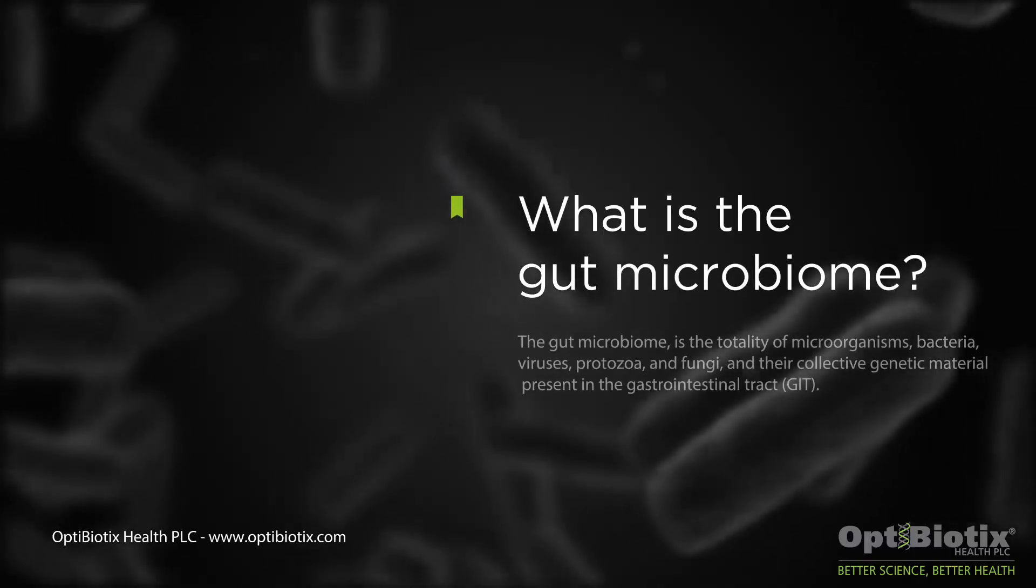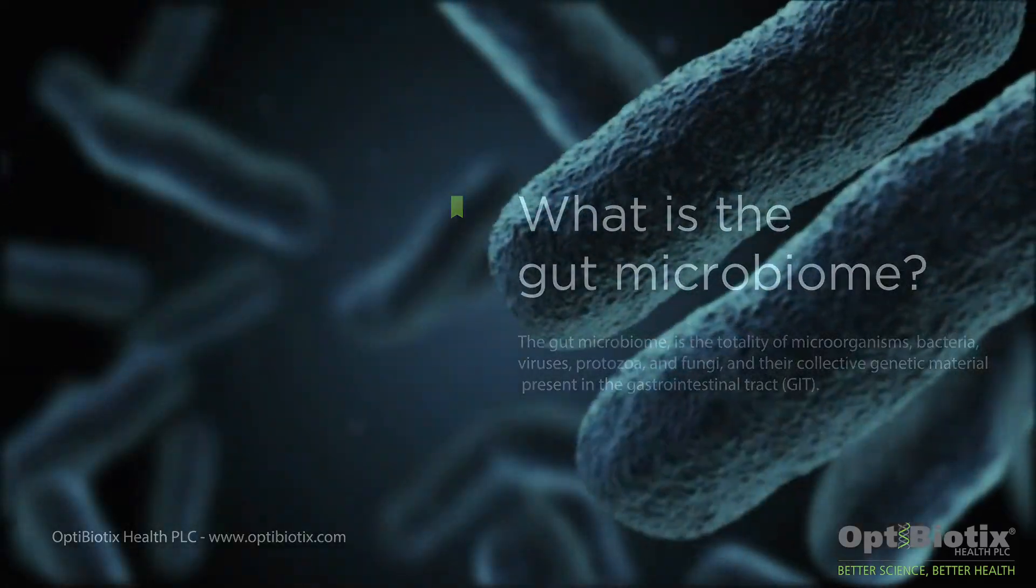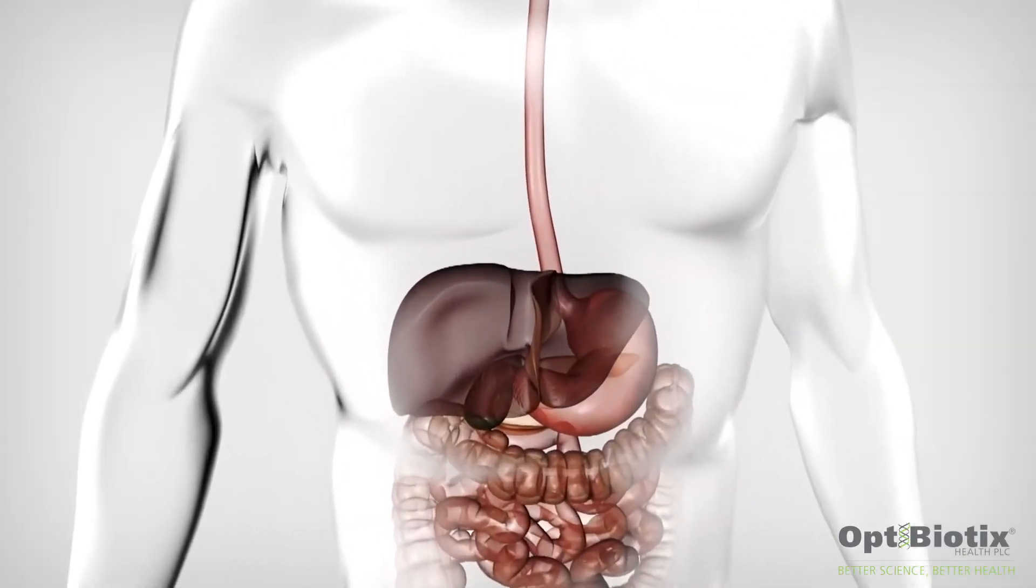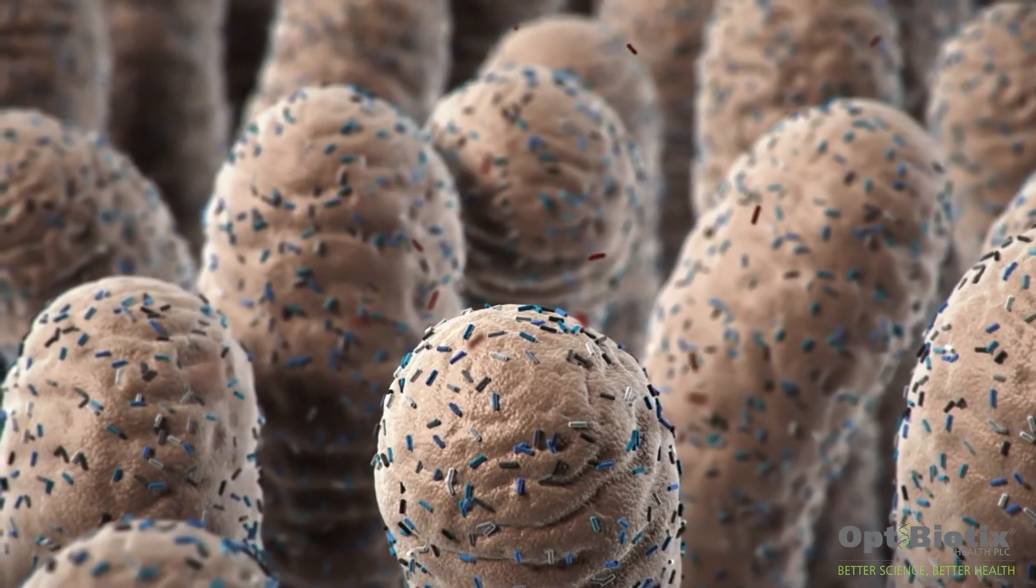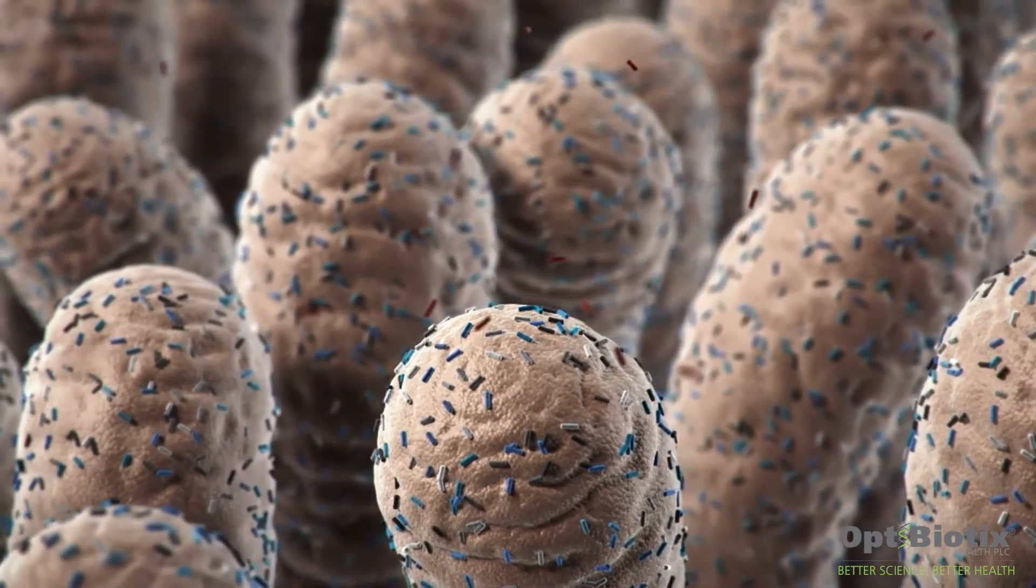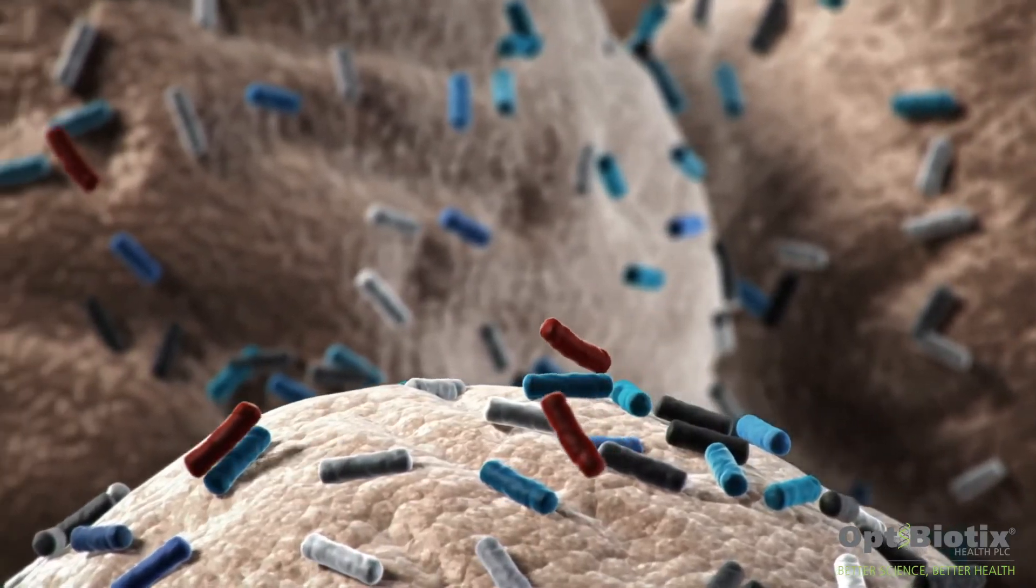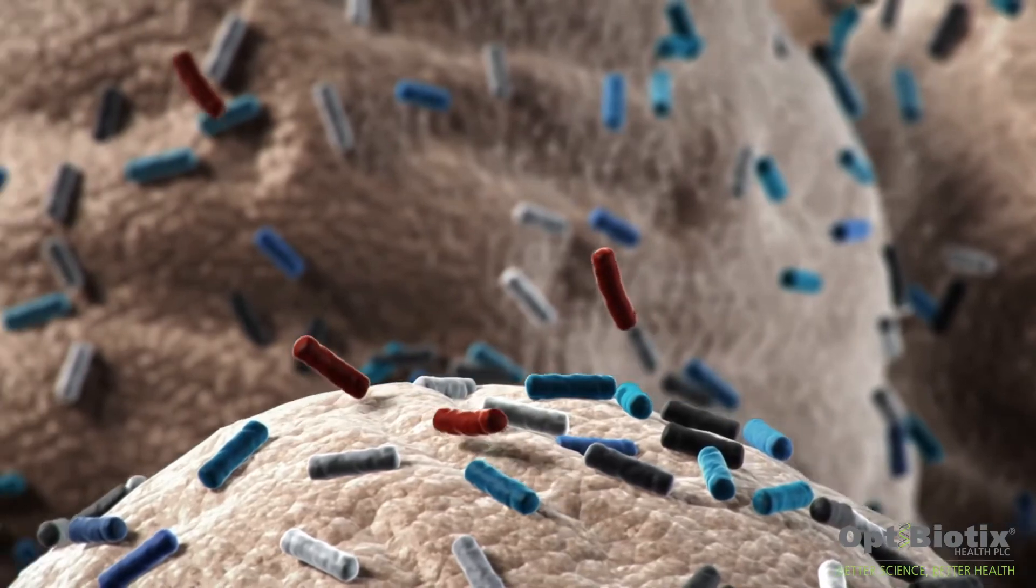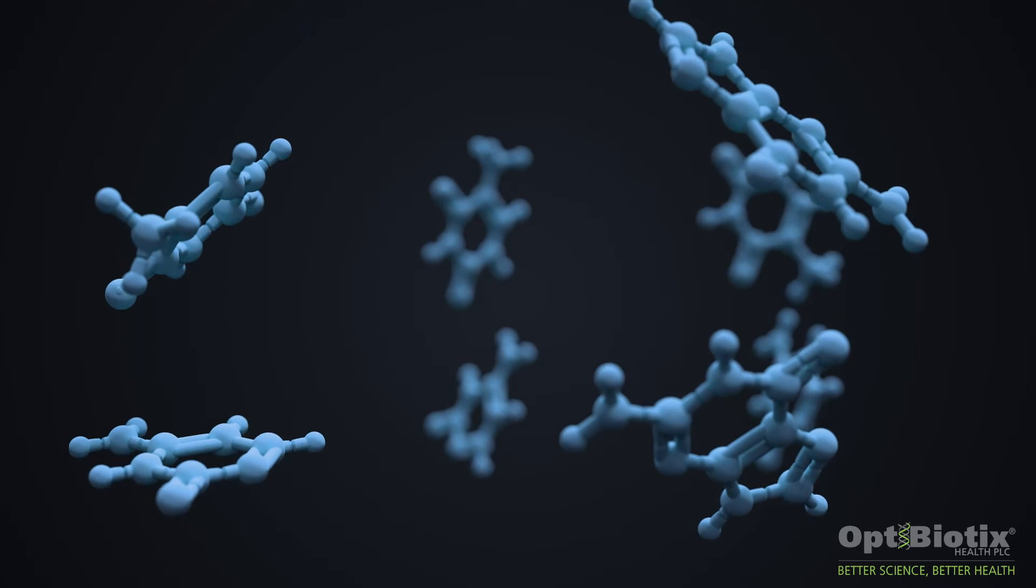The gut microbiome is actually the collection of bacteria and all of their genes that live within the human gut. There's a very complex ecosystem down there. Many different species of bacteria, all with different metabolic potentials, all interacting with each other and producing a variety of organic acids and other compounds as metabolites.